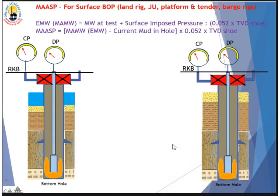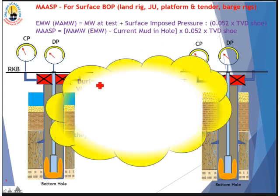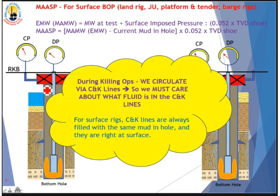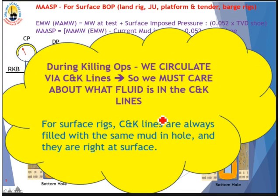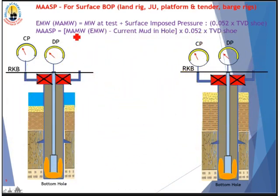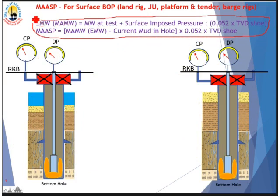For surface BOPs — land rigs, jackups, platforms, and tender rigs — calculating MASP is straightforward. During well killing we circulate through the choke line or kill line, so we must know what fluid is in those lines. For surface stacks, the choke and kill lines are always filled with the same mud as in the hole and are located right at surface, so a simple formula is used to work out MASP.